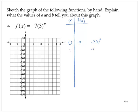If x is 1, negative 7 times 3 to the first, negative 7 times 3 is negative 21. Negative 7 times 3 to the second. Negative 7 times 9 is negative 63.